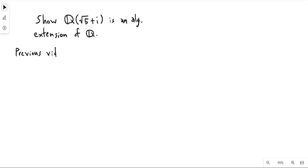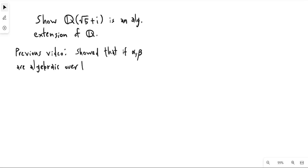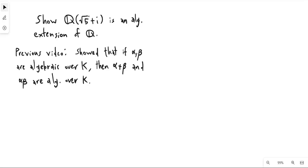In the previous video, we showed that if alpha and beta are both algebraic over a field k, then both the sum of alpha and beta and the product of alpha and beta are algebraic over k as well. I wanted to do that video first because this is really just a particular case of that. But I also wanted to cover how you could show that this particular complex number is algebraic over Q directly.